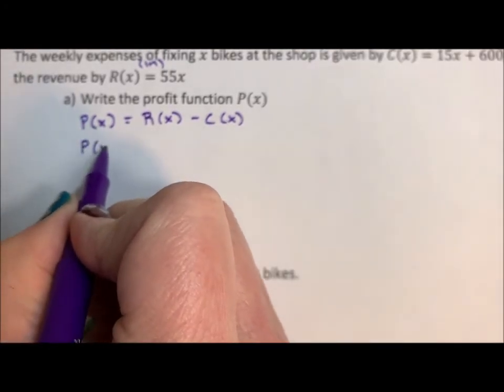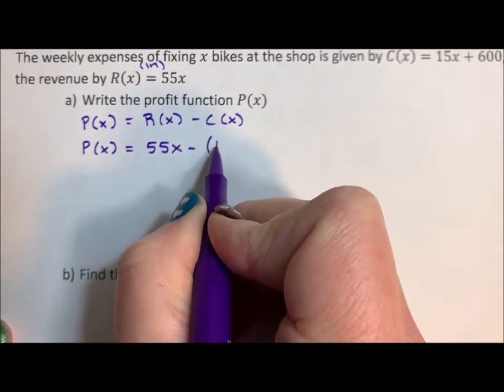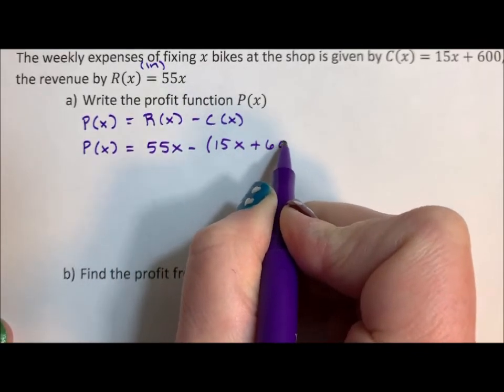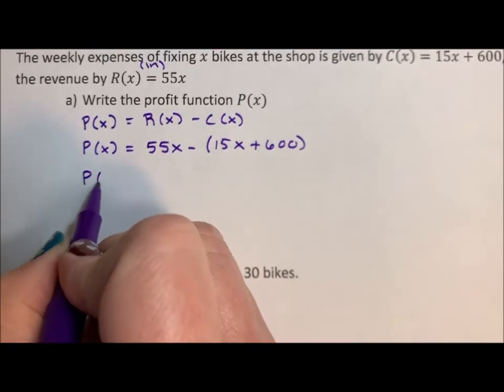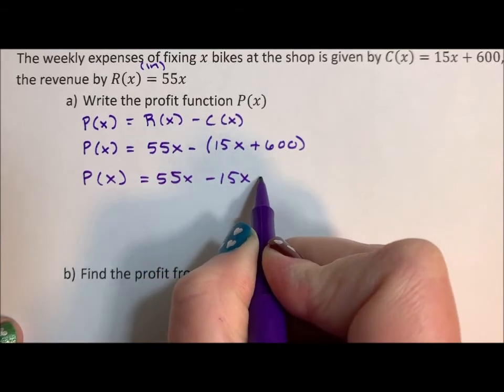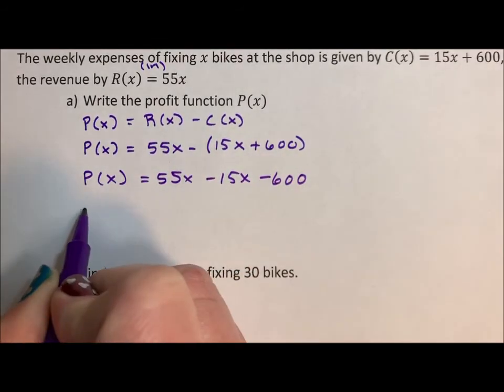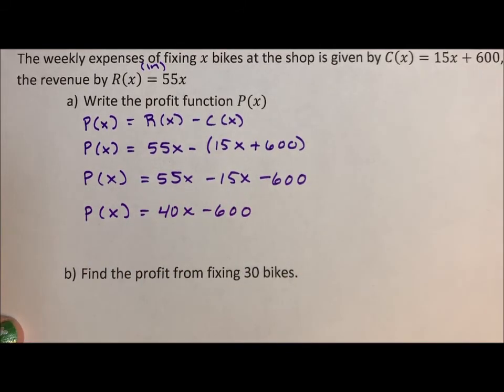So the profit is going to be 55x minus, put this in parentheses, 15x + 600. If you don't put it in parentheses, that 600 is not going to be subtracted out. Trust me, I've seen it over and over. That minus has to be distributed. Everything in cost has to work against profit. Costs are against your profit. So P(x) = 55x - 15x - 600. So the profit is 40x - 600.